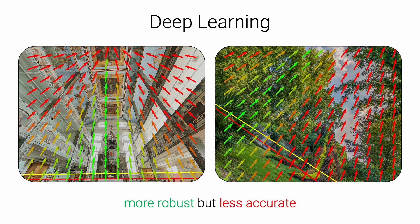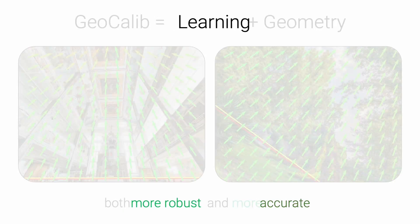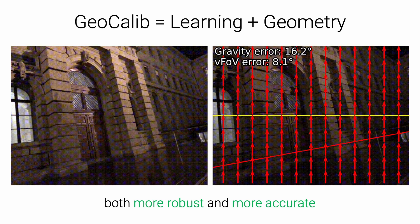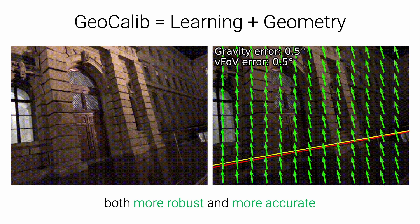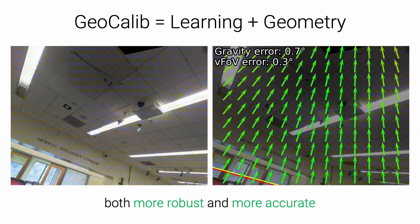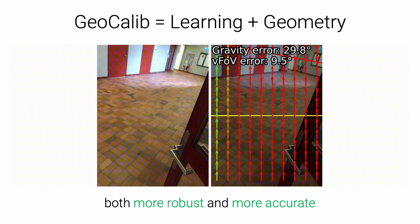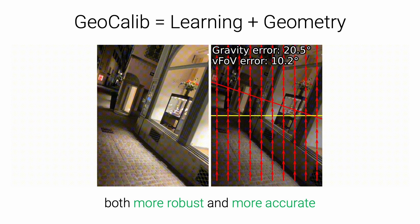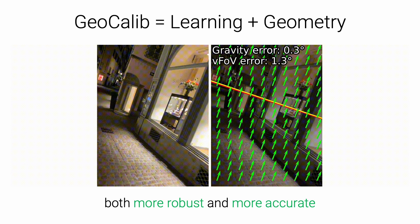Notably, each neural network needs to relearn projective geometry from scratch when trained. In this work, we introduce GeoCalib, a neural network that combines the best of both classical and learned approaches to estimate the gravity direction and the camera intrinsics given a single image. GeoCalib learns to steer an optimization process using geometric and semantic cues learned end-to-end. This optimization is based on well-known principles of projective 3D geometry, making GeoCalib both more robust and more accurate than existing approaches.